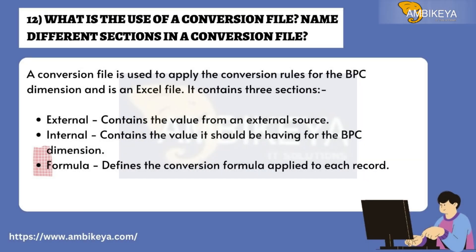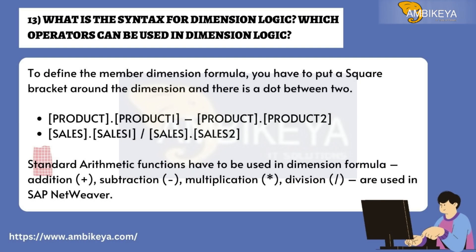Question 12: What is the use of a conversion file and its different sections? A conversion file is used to apply conversion rules for the BPC dimension and is an Excel file. It contains three sections: External — contains the value from an external source; Internal — contains the value it should have for the BPC dimension; Formula — defines the conversion formula applied to each record.